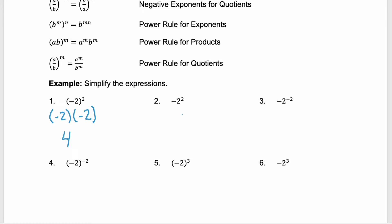In example 2, we have negative 2 squared again, but notice there's no parentheses. Therefore, that exponent is only applied to what it directly attaches to — the 2, not the negative. Remember that this could be written as negative 1 times 2 squared. See how the exponent is only attached to the base 2? That would give us negative 1 times 2 squared, which is 4, or negative 1 times 4, which is negative 4.